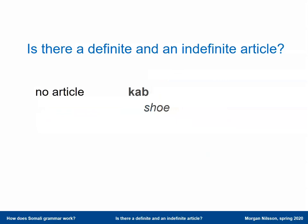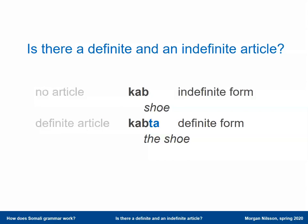So in Somali there is the possibility of having the noun without an article — 'kap' — or with a definite article — 'kapta'. But there is no such thing as an indefinite article. Also, the article is not an independent word like in English; it's a suffix, an ending. So instead of talking about articles in Somali grammar, it's more convenient to talk about forms — we have an indefinite form and a definite form in Somali. The indefinite form has no ending, whereas the definite form has the ending '-ta'.